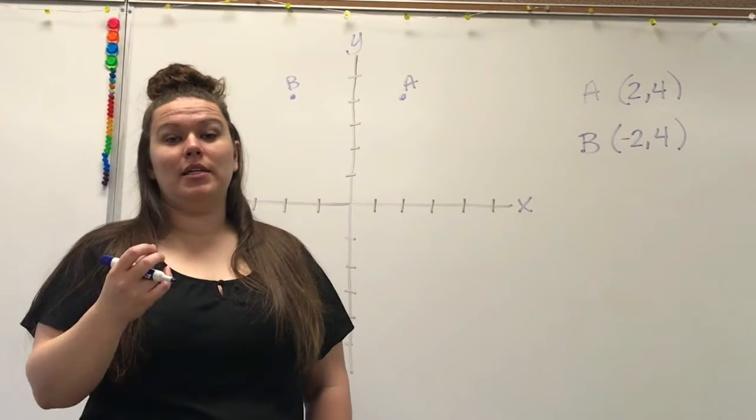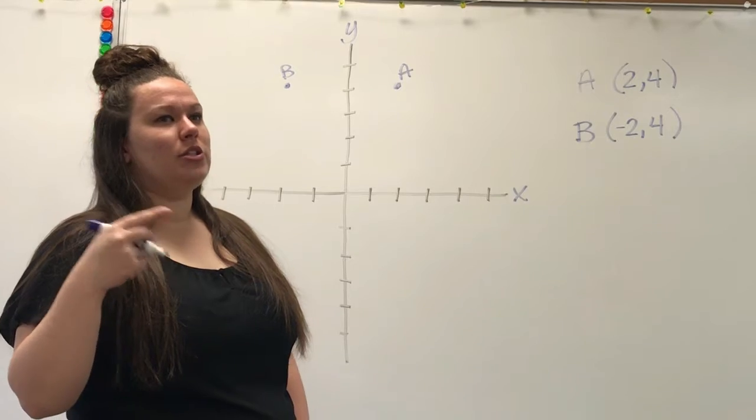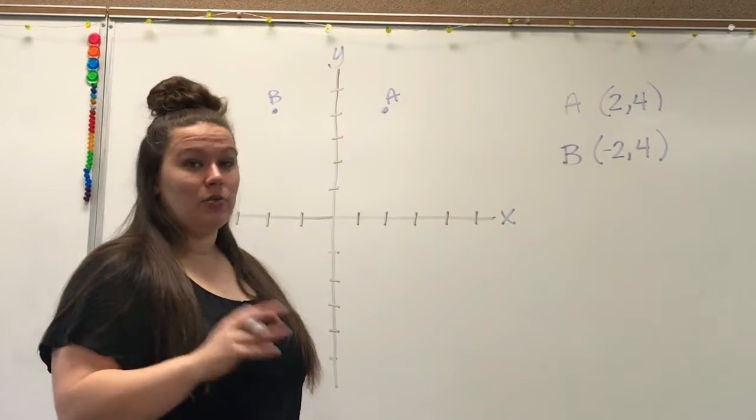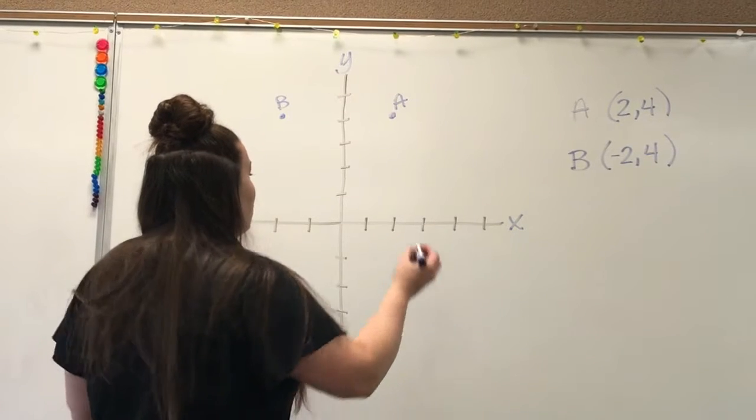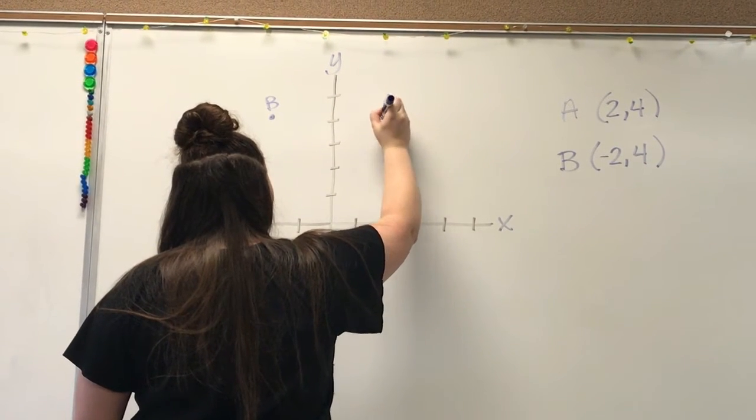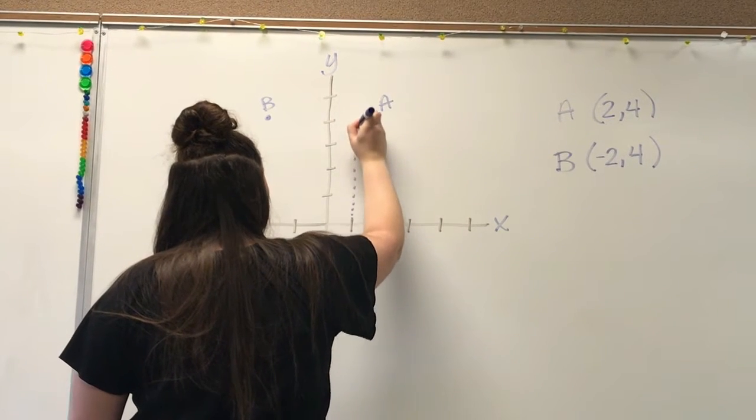This is the whole point of the lesson: to count your jumps. People don't always start where they need to start and people don't always end where they need to end, and that is where they get mixed up. Starting at A, you have to start on the dot.